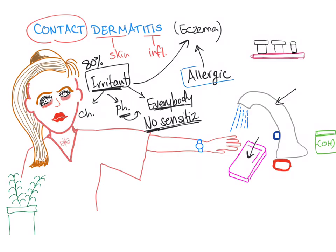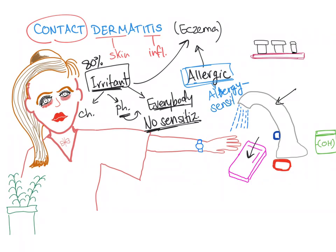On the other hand, allergic contact dermatitis doesn't occur to everybody — only to people who are allergic to the substance. It requires sensitization or previous exposure, and it's a delayed type or type 4 hypersensitivity reaction. The patient has to be exposed and sensitized first, and on the second exposure, the problem will happen. An example of an allergic substance is nickel, found in buckles or certain jewelry.